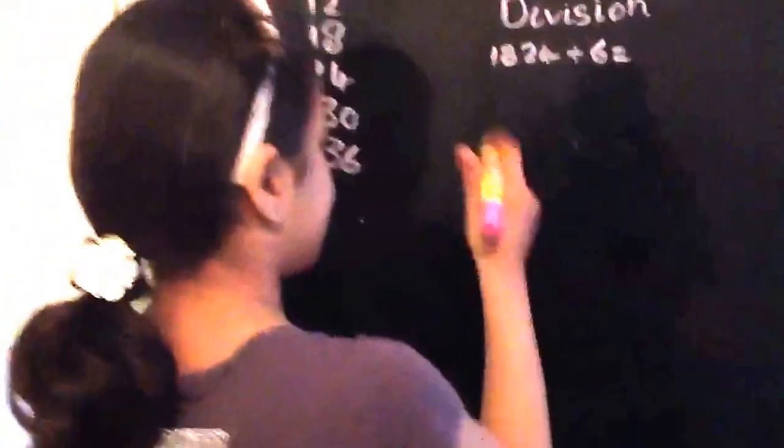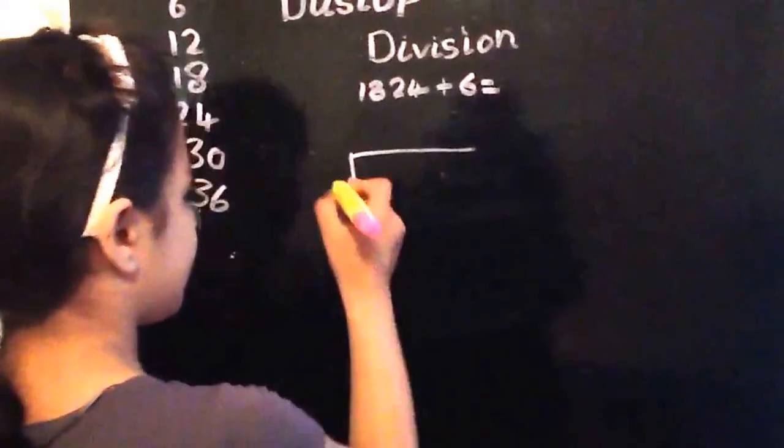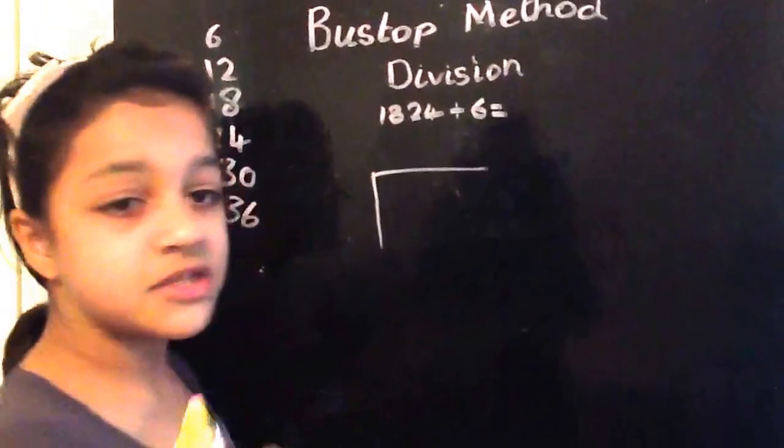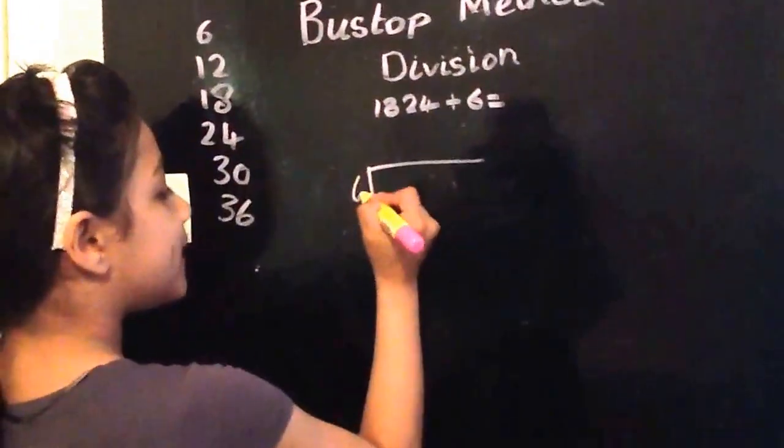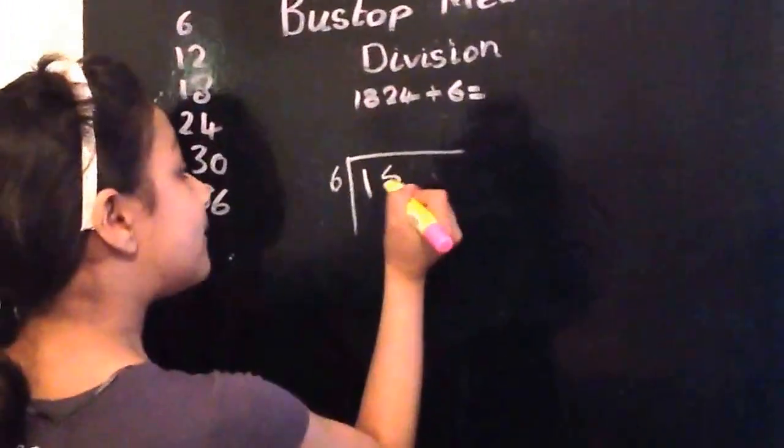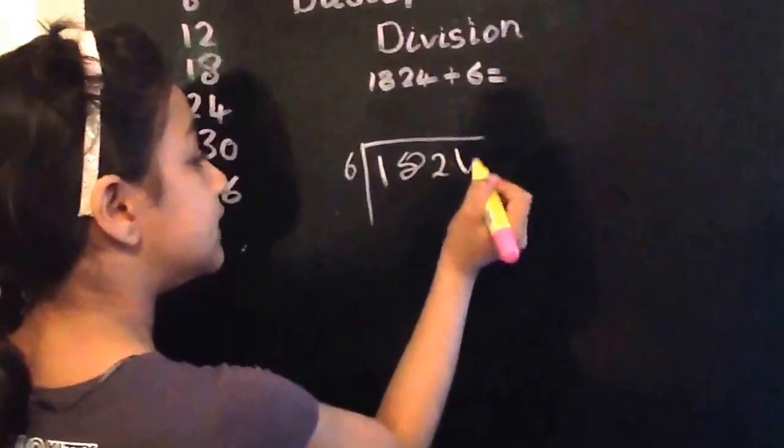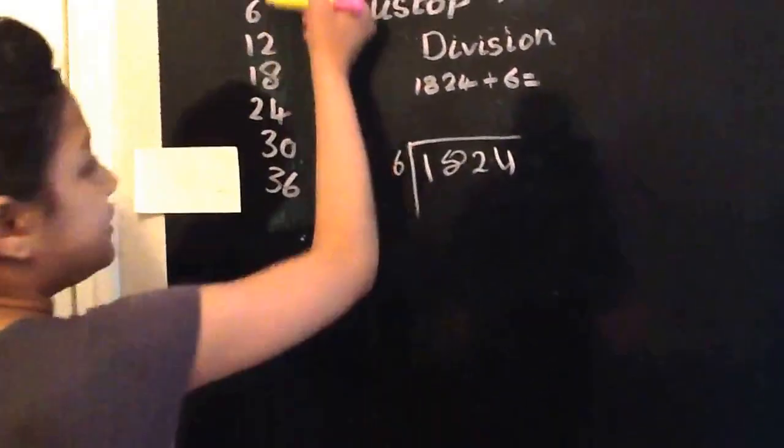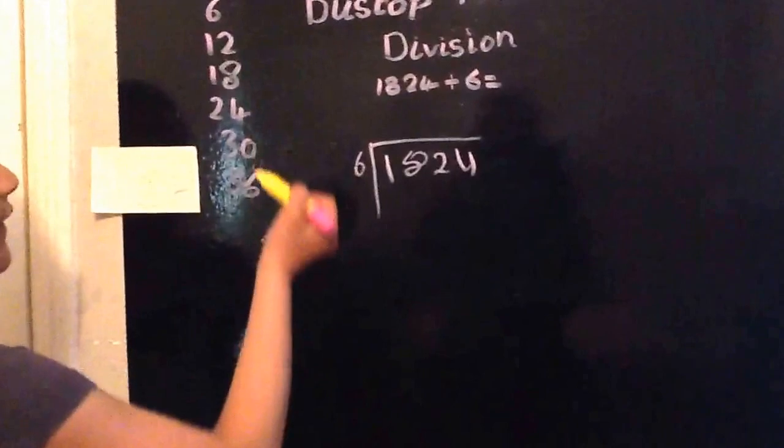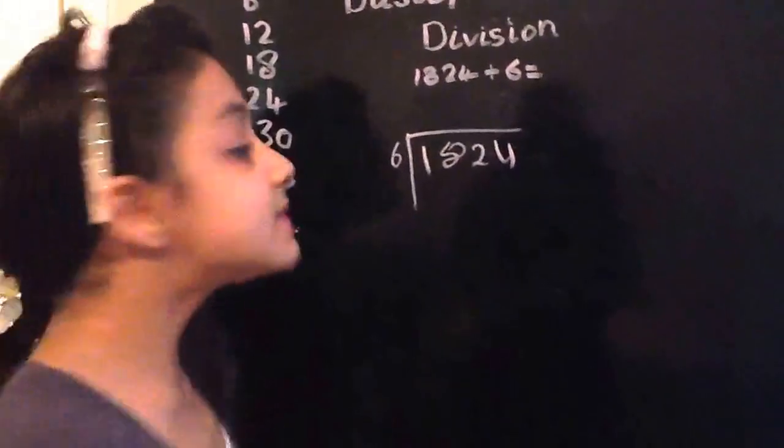So, this is our bus stop. The small number always has to be outside and the biggest number has to be inside. So we can write six times tables in the corner, so it will help us.